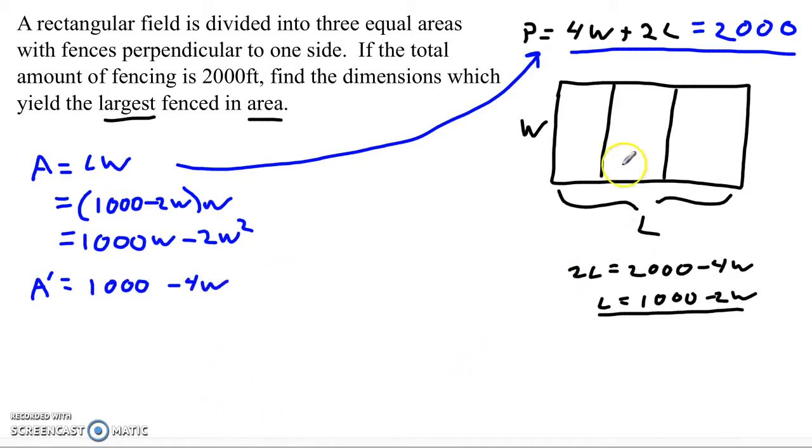So if we're looking to maximize this area, right, the largest fenced in area, then we're going to be wanting to find any critical points of this derivative, create a prime line, and look at what's happening.